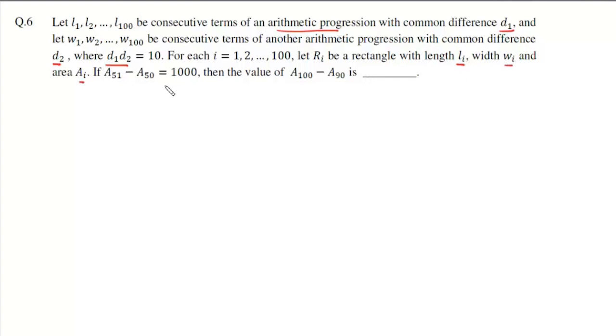Now if A51 minus A50 is 1000, then find the value of A100 minus A90. For this Ri, if we consider Li, Li will be L1 plus i minus 1 times D1 and Wi will be W1 plus i minus 1 times D2.